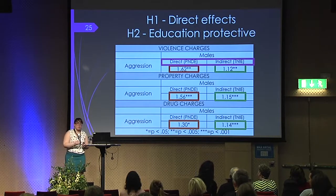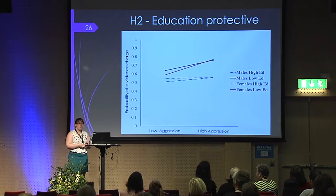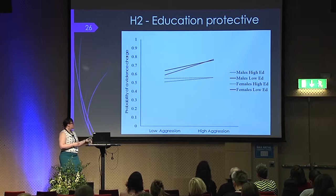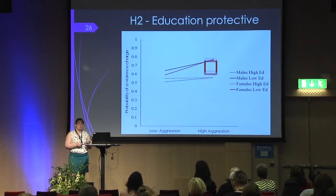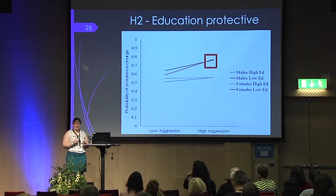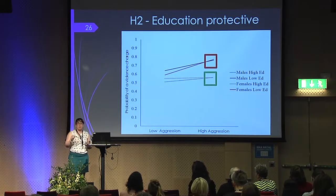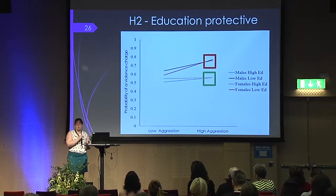To further elaborate, I tested moderation — aggression by education for both males and females. Those with low aggression are on the left, high aggression on the right, and probability of a violence charge on the y-axis. Our highest risk group are those with high aggression and low education. The protected group — those with high aggression but who also managed to get a high education — are protected to the point where they're similar to their low-aggressive counterparts.